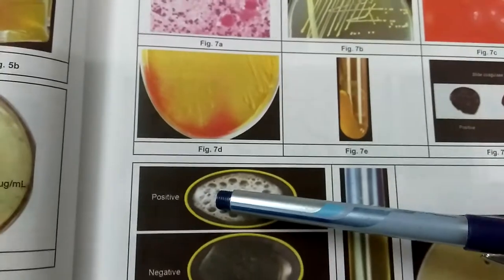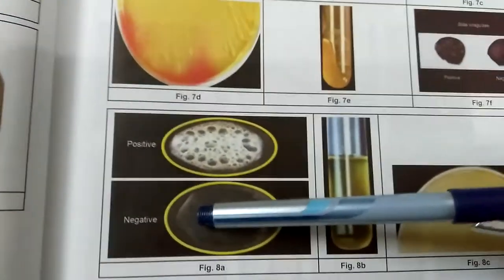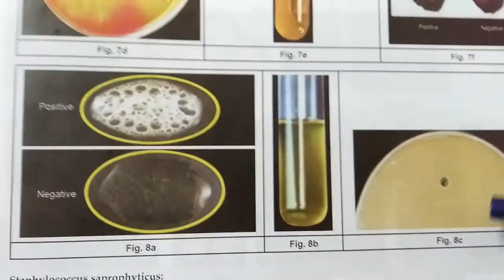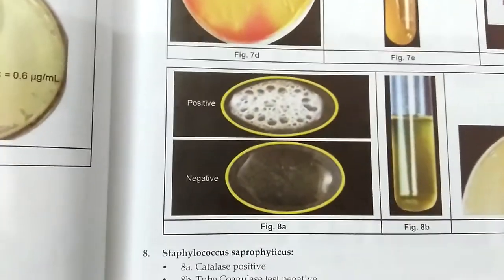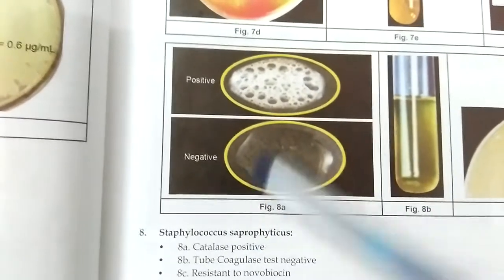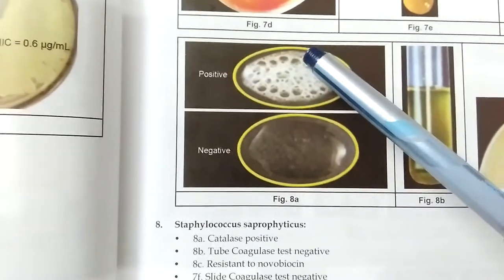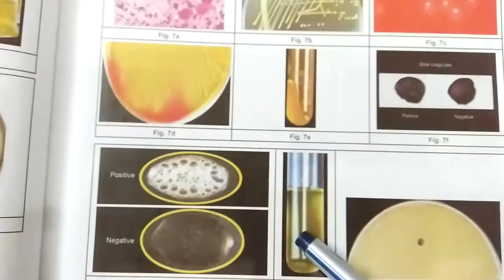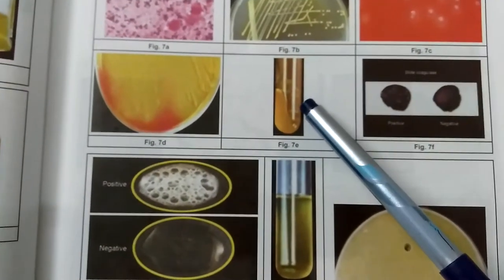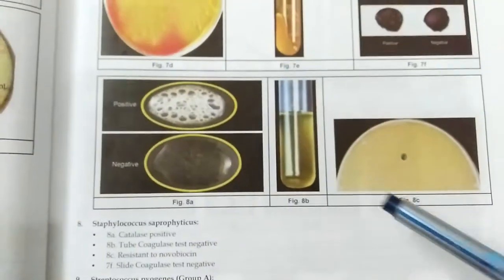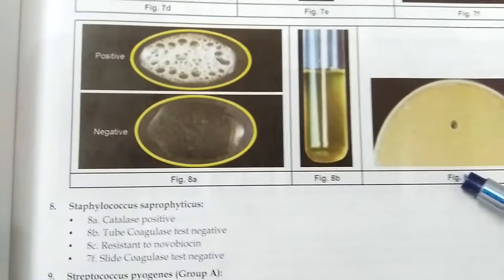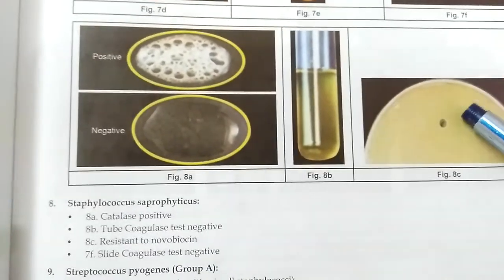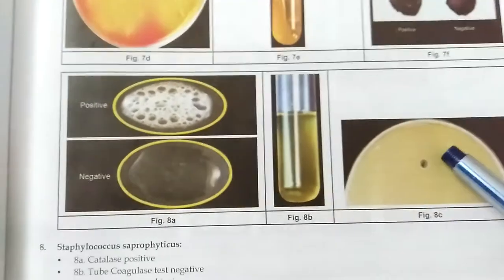Now we move on to the next set of images: 8a, 8b, and 8c. Image 8a is catalase positive. Image 8b is the tube coagulase test negative — in contrast to the earlier positive result. Image 8c shows resistance to novobiocin, which will look like this.